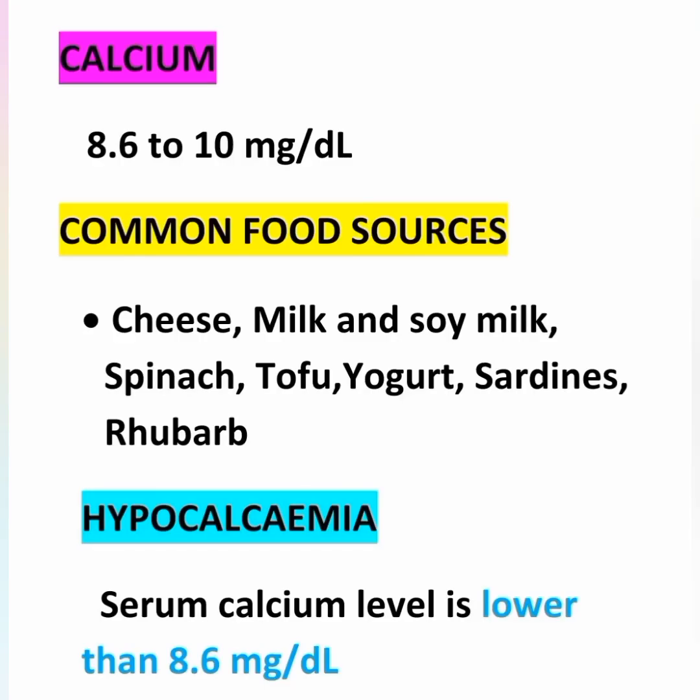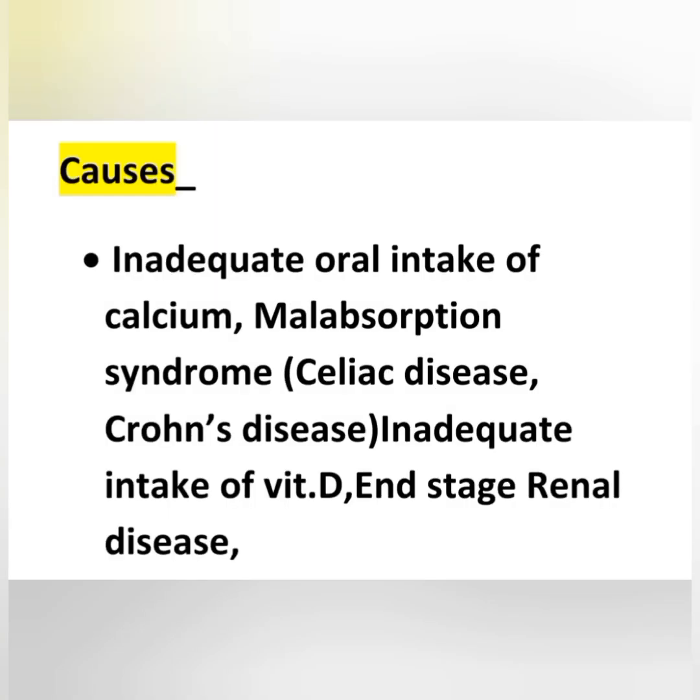Next mineral is calcium. Normal serum calcium level is 8.6 to 10 milligrams per deciliter. Common food sources include cheese, milk, soya milk, spinach, tofu — which is prepared from soya milk — sardines, which is a type of fish, and rhubarb, which is a type of leafy vegetable. These are the main sources of calcium.